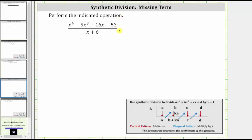We're asked to perform the indicated operation. A fraction bar represents division, so for this example we'll perform synthetic division. But first we need to make some changes to the dividend or the numerator. Notice how the dividend is x to the fourth plus five x cubed plus 16x minus 53. The first thing we need to recognize is that the coefficient of x to the fourth is one, and also because there is no x squared term, we need to include a zero x squared term.